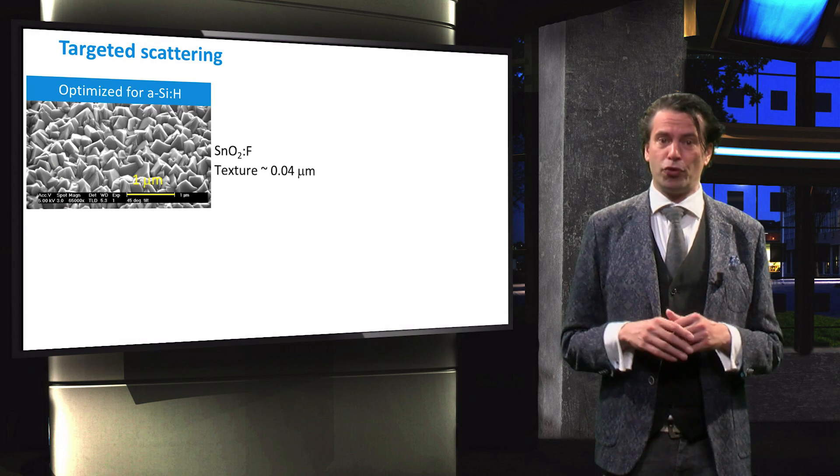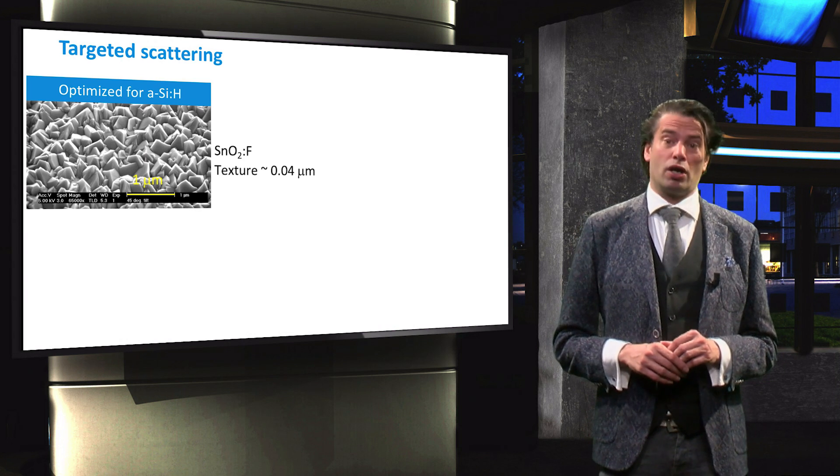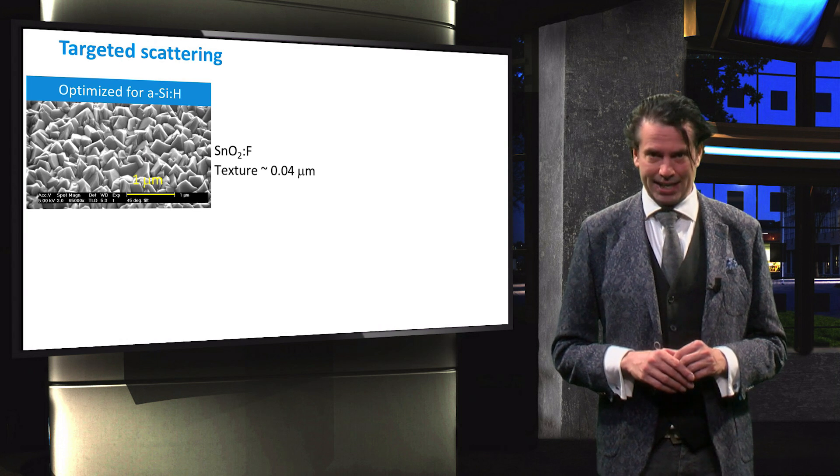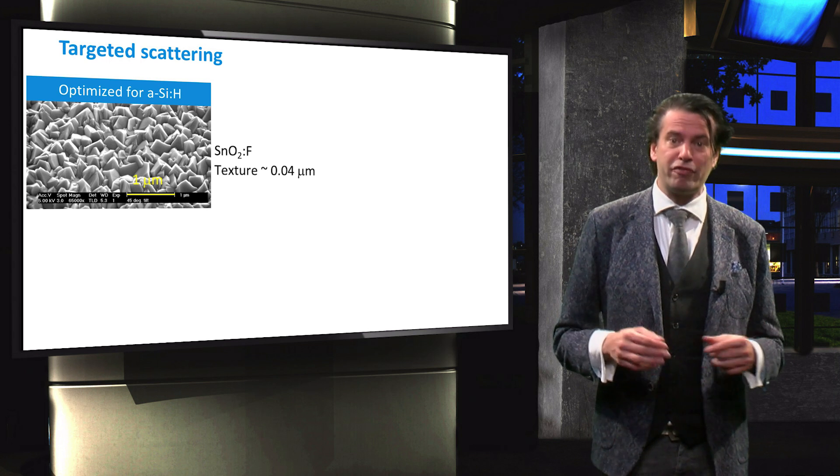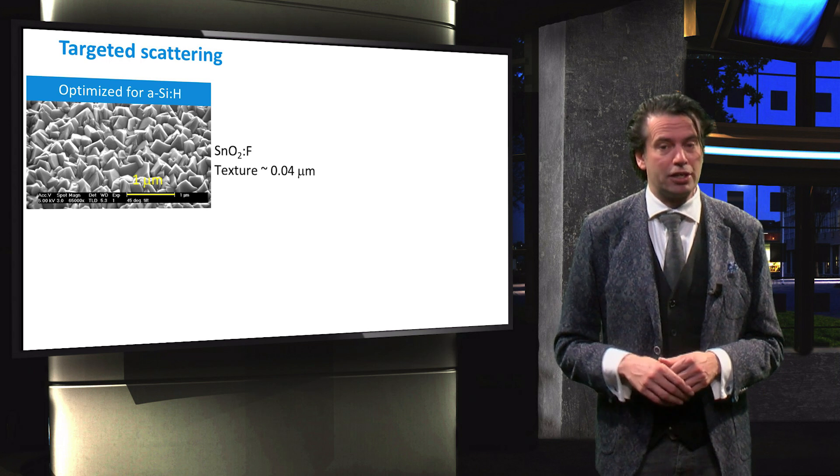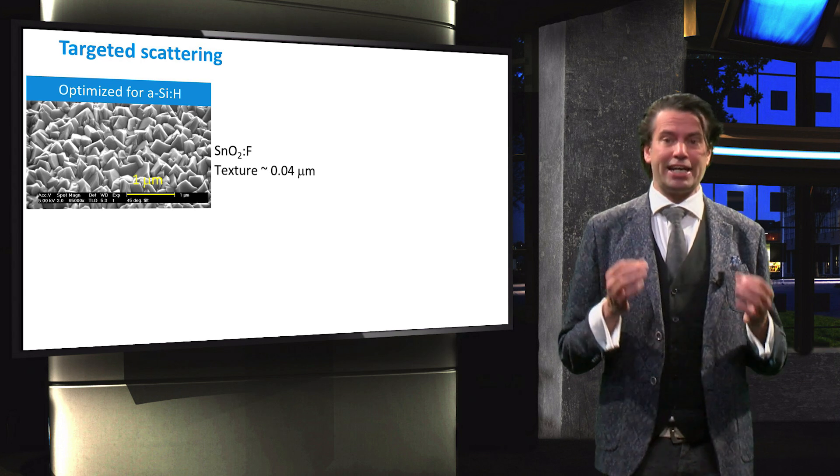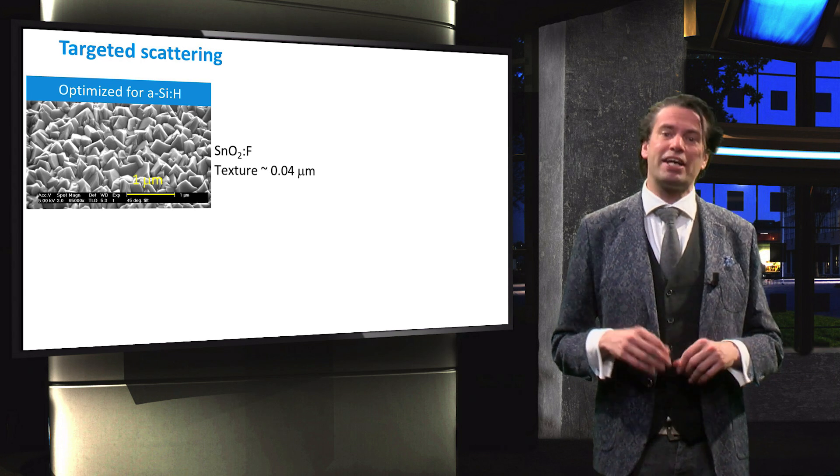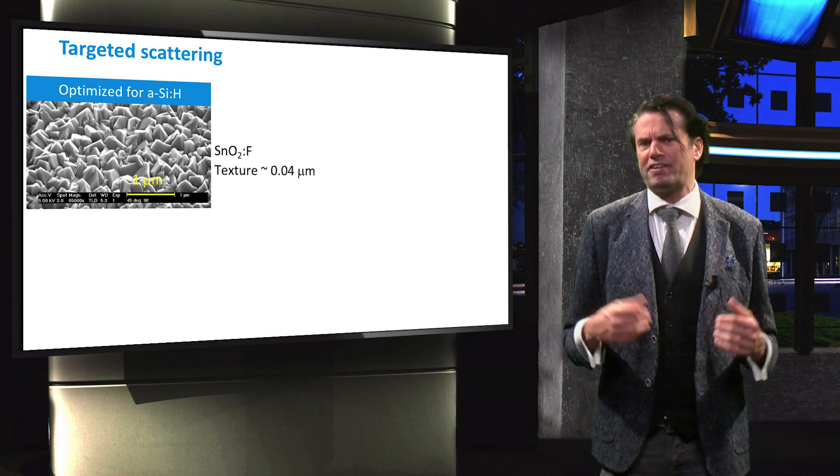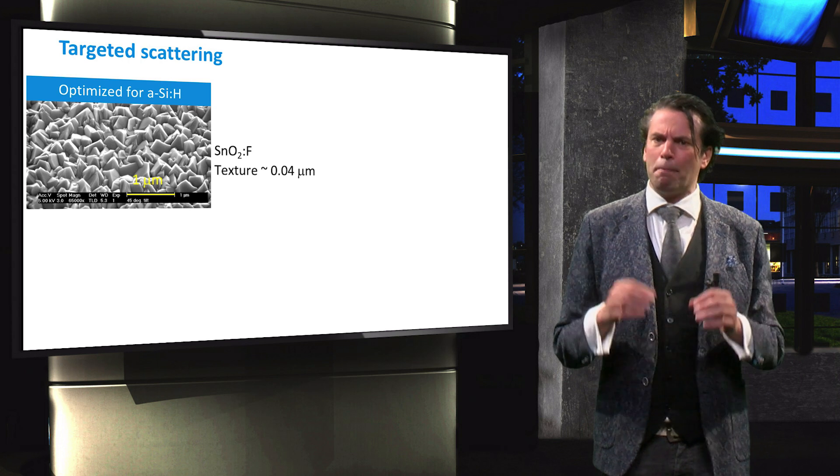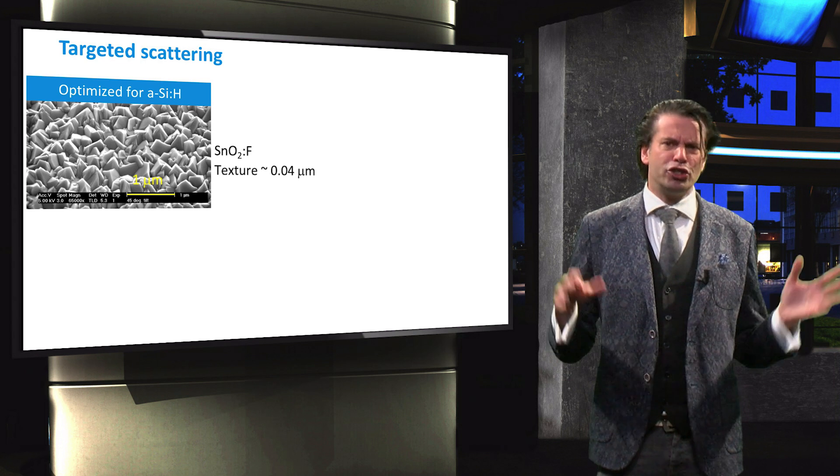Here a picture of typical textured fluorine-doped tin oxide is shown. This tin oxide on glass is processed by the Japanese company Asahi Glass. This glass TCO substrate acts as the substrate for a hydrogenated amorphous silicon PIN junction. The shown surface roughness is the optimized texture for optimal light trapping in amorphous silicon single PIN junctions. This texture facilitates the light trapping in the important spectral range of 550 nm up to 700 nm, just above the band gap of amorphous silicon.